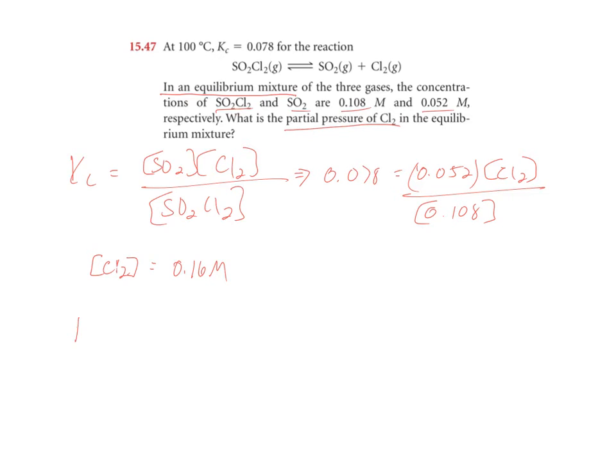And again, we can find partial pressure using the ideal gas law relationship. So the partial pressure of Cl2 is based on its molarity, universal gas constant, and temperature. We know that N over V here represents moles per liter, that's the molarity. We already found that in our last step. So 0.16 molar, which is moles per liter, that's N over V times R.